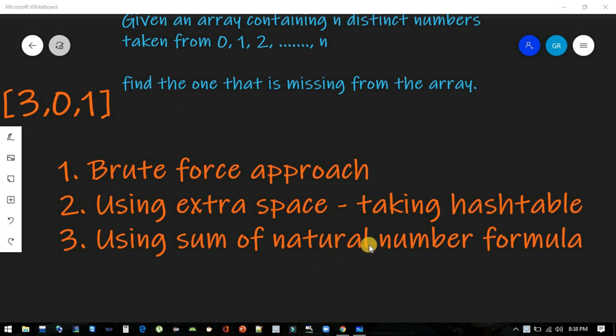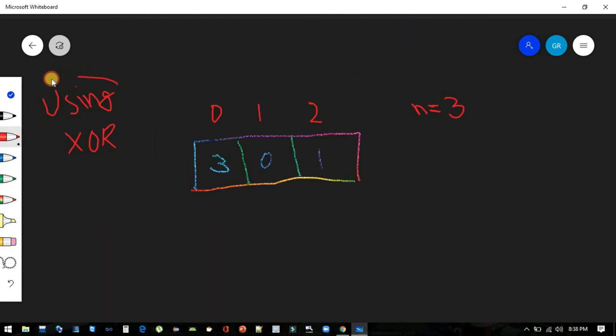And the third was sum of the n natural number formula. Now one more approach is there which is using XOR. Using bitwise XOR, n is 3, we will first take 3 and we will do XOR of 3, 2 is first element, and its index which is 0. Now again do XOR of 0 and this index.